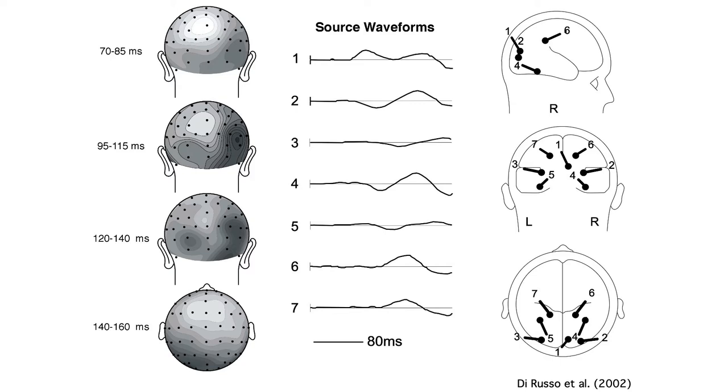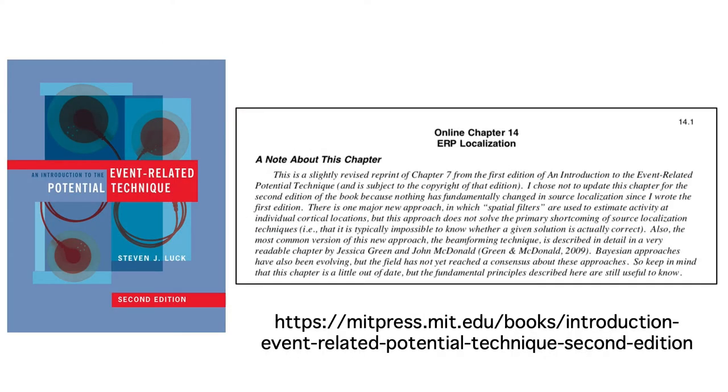Also, given noise in the data and imperfections in the forward model, it's possible for the best-fit solution to be quite different from the true solution. You can read more about these issues in this online chapter from my ERP book.